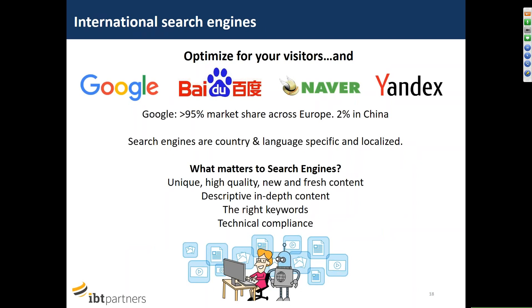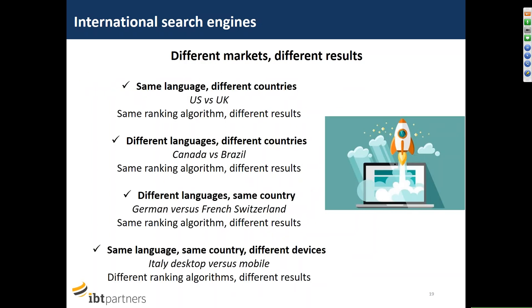On to search engines. Google is one search engine among many and it depends on where you are located. Knowing about search engines is all about making sure your local website is well understood and visible to your target audiences. There are differences in search engine algorithms between markets — for example, the US versus the UK — and even some interesting differences across the same language in different countries and different devices.